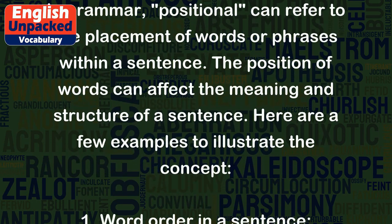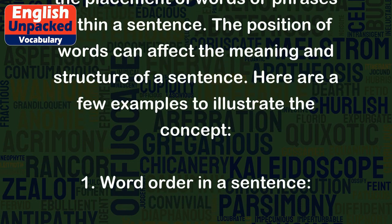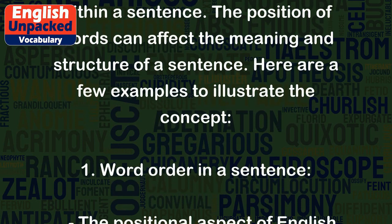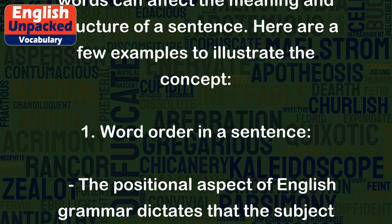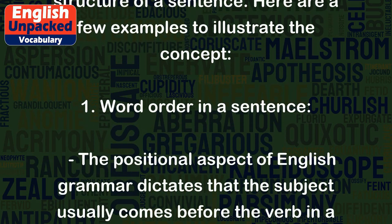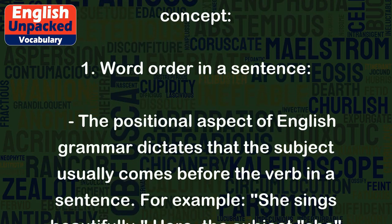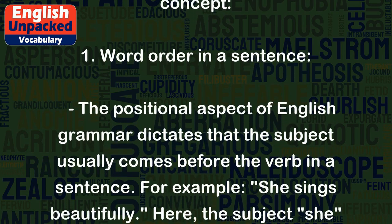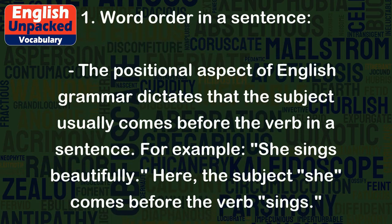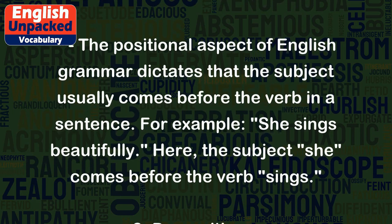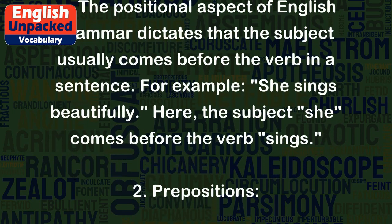Here are a few examples to illustrate the concept. 1. Word order in a sentence. The positional aspect of English grammar dictates that the subject usually comes before the verb in a sentence. For example, she sings beautifully. Here, the subject she comes before the verb sings.